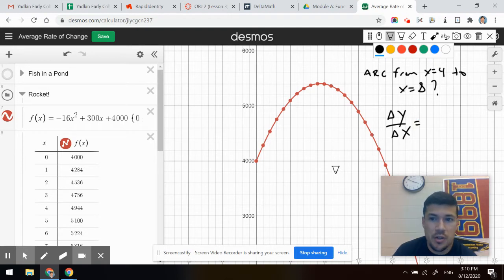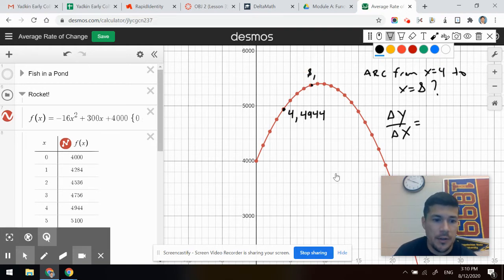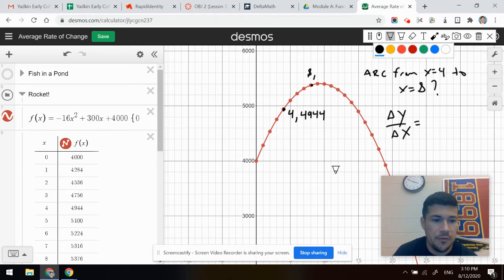Looks like my points are at four, one, two, three, four. So that's this guy right here. That's that four comma four thousand nine hundred and forty four. And then five, six, seven, eight. And then my point at eight is eight comma, let's see, fifty three, seventy six.